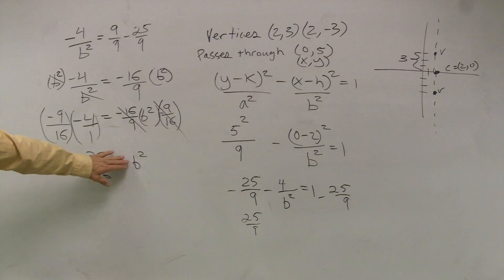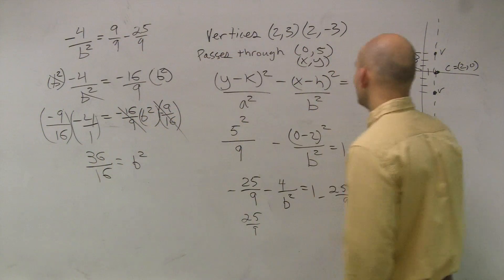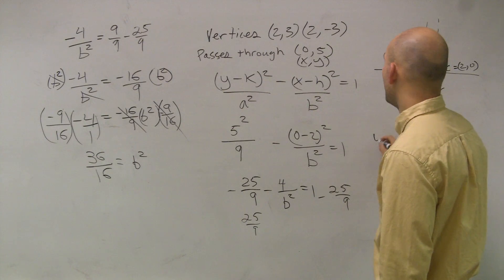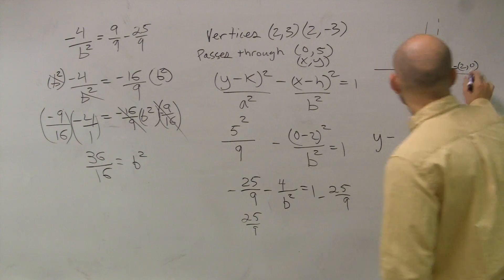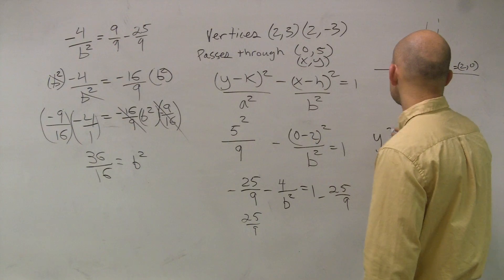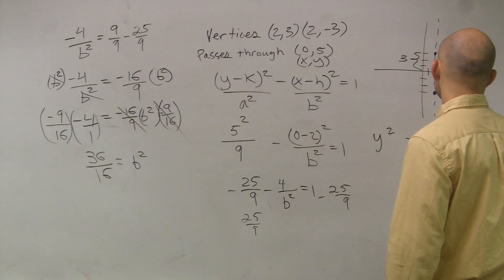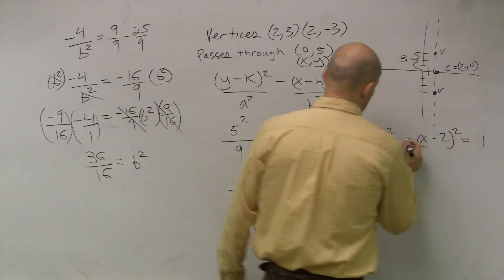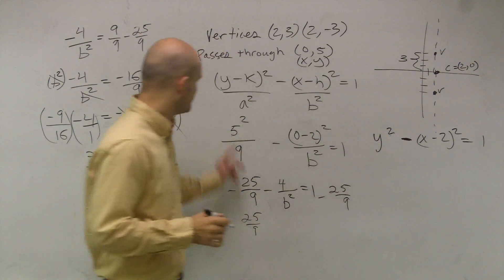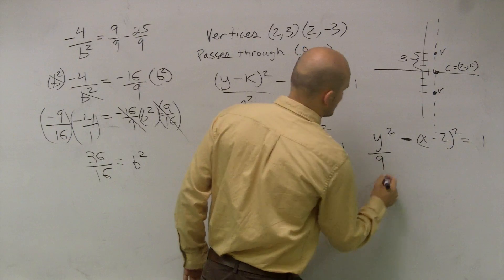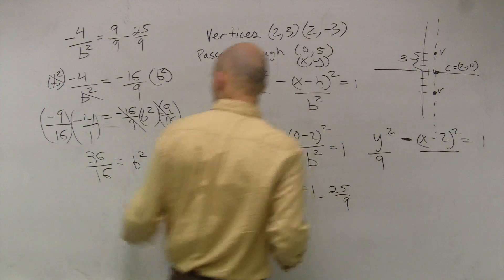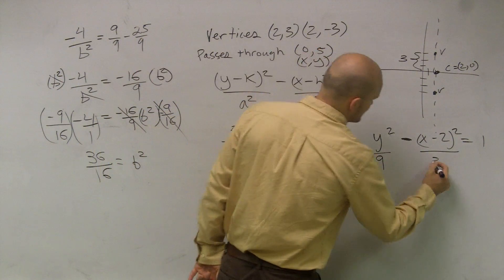So we just need to find our standard form, right? So we write y minus our k, which is 0. So it's just going to be y squared minus x minus 2 squared equals 1. And then our a we figured out was 9.